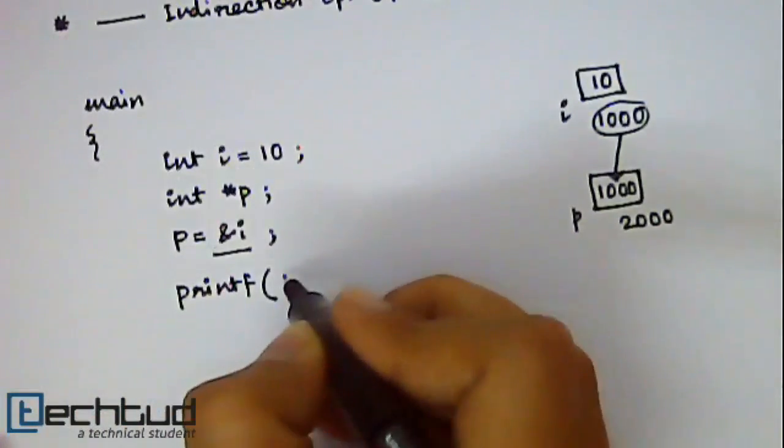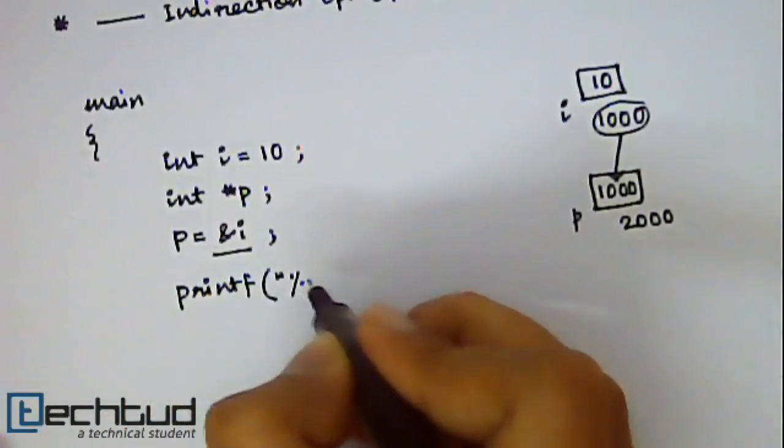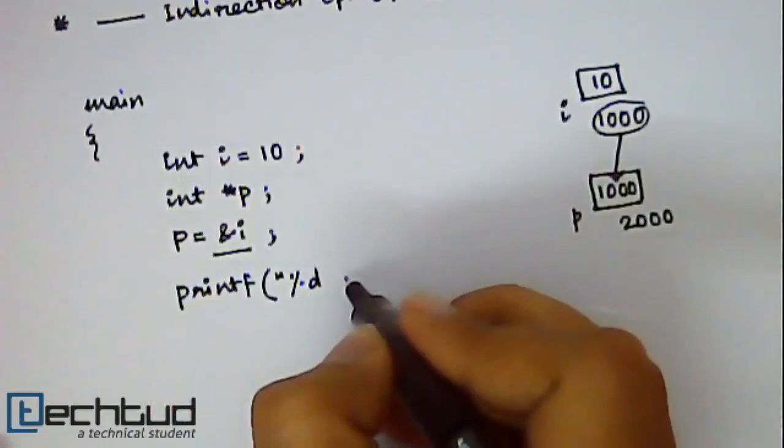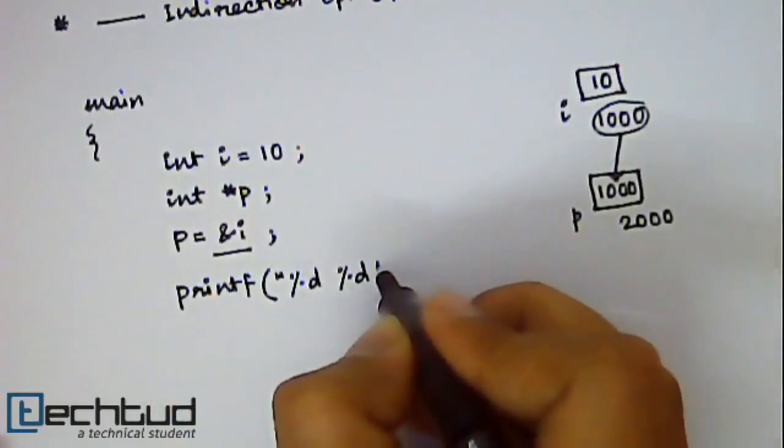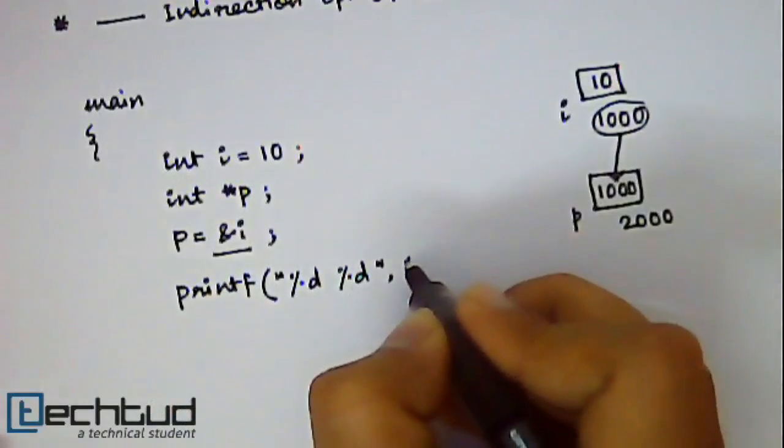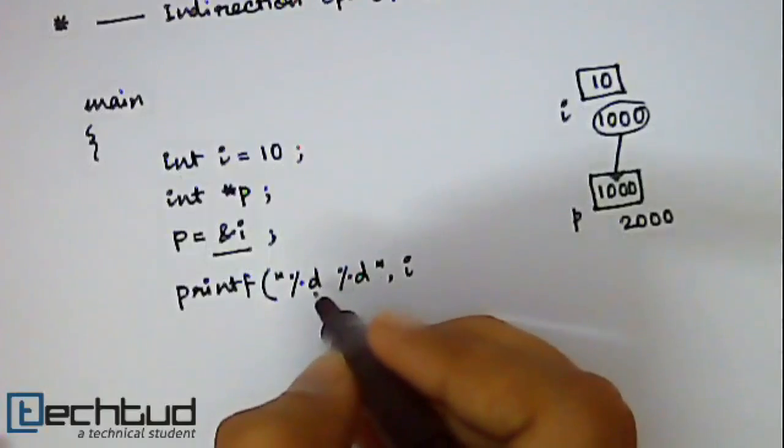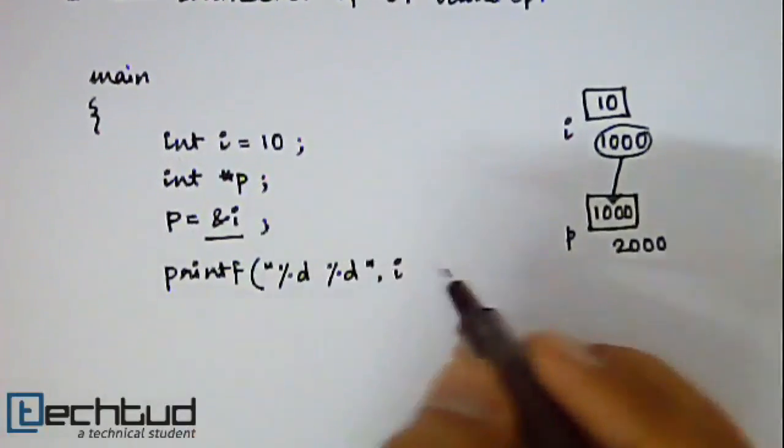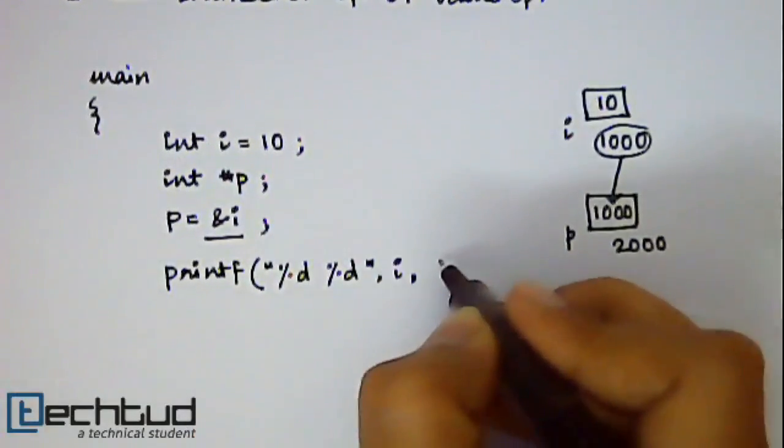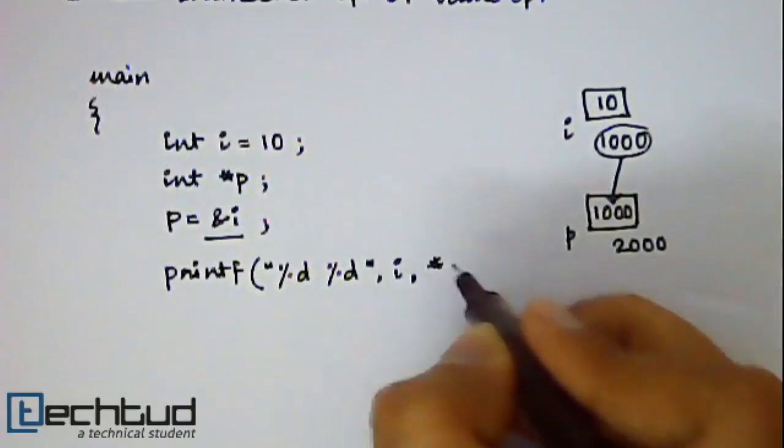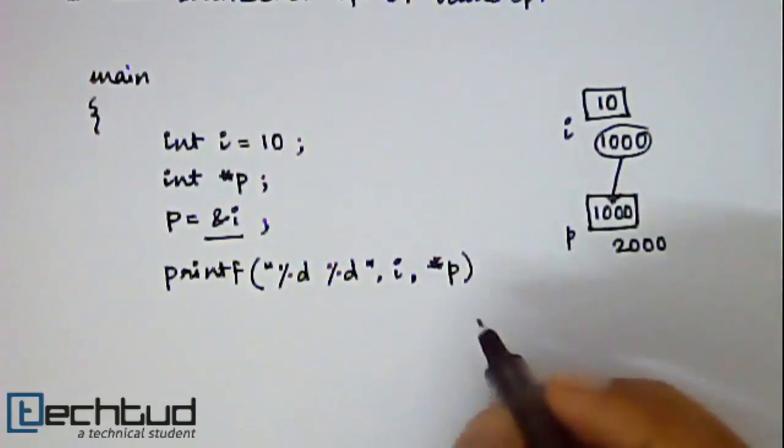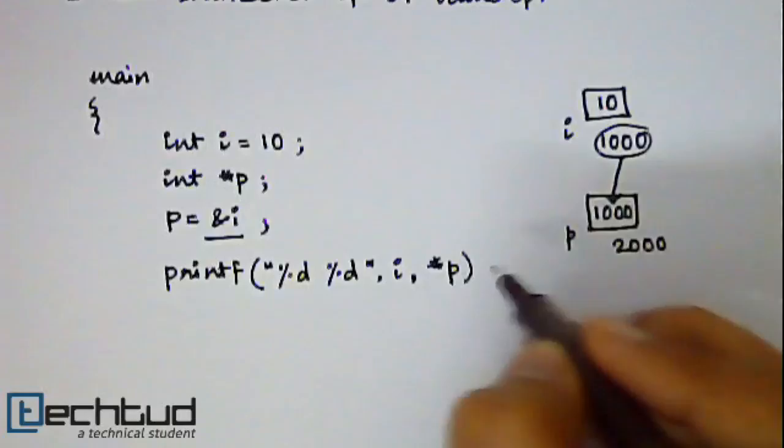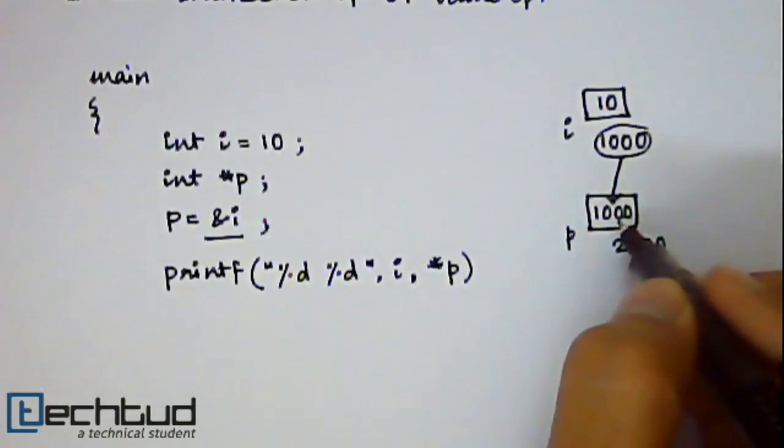So you write printf %d %d i. So first the value of i will be printed which is 10. Next you write value of p. So what will be the value of p? Value of p will not give you 1000.